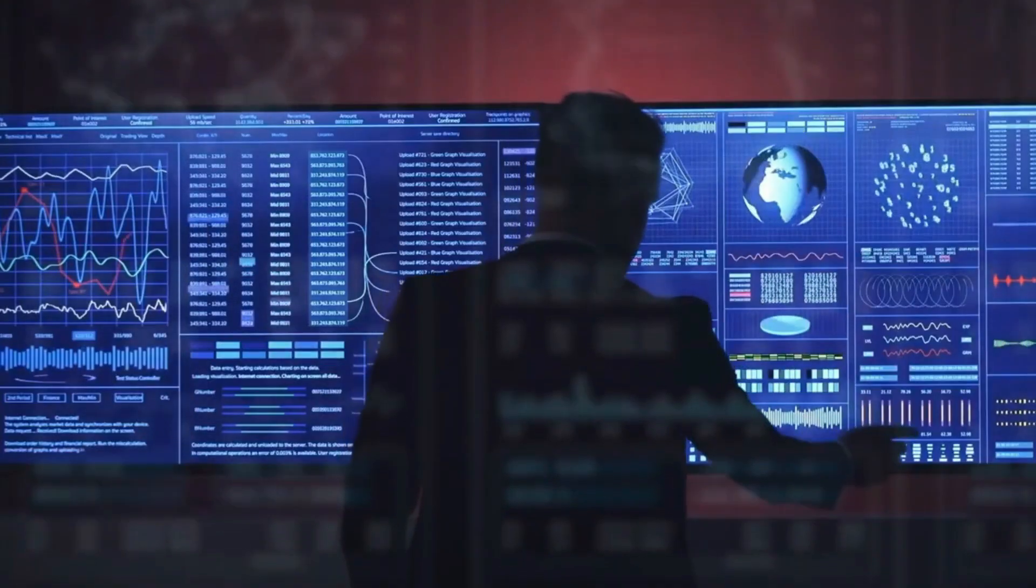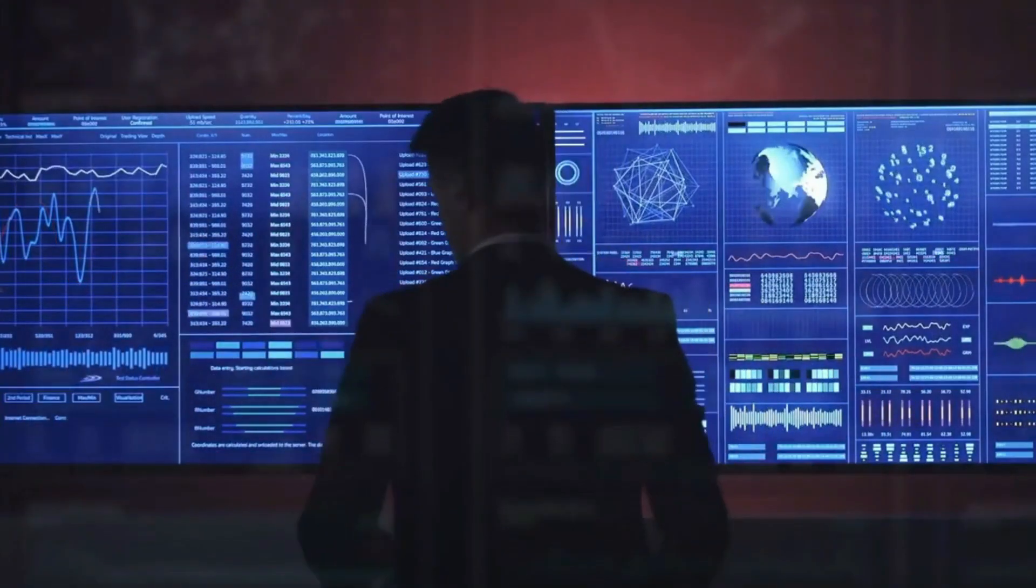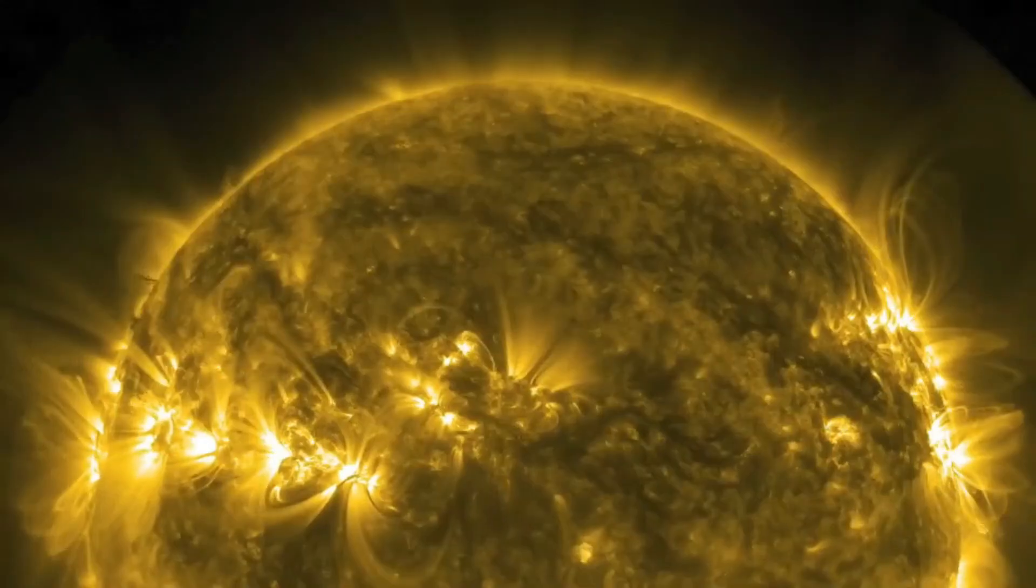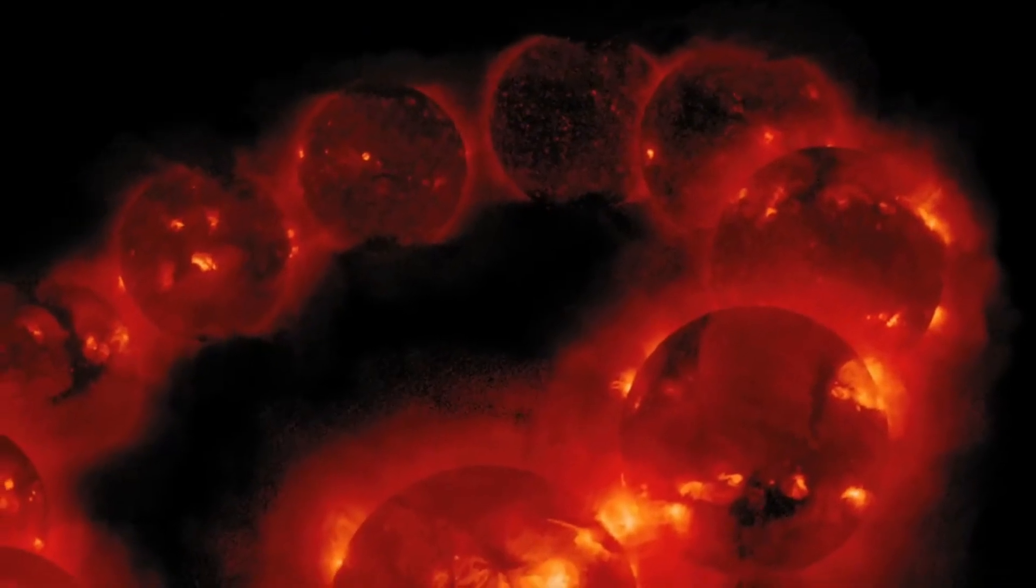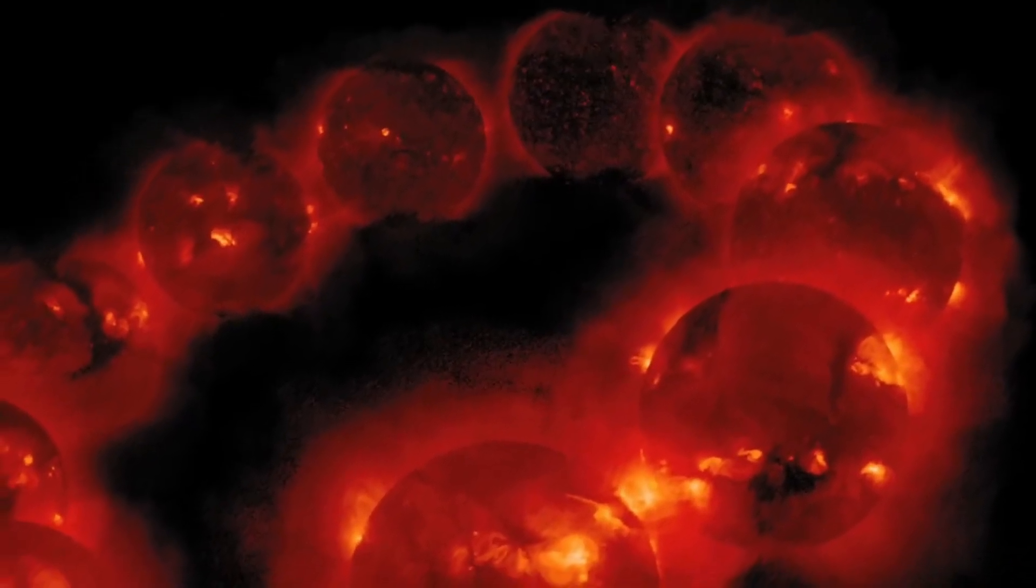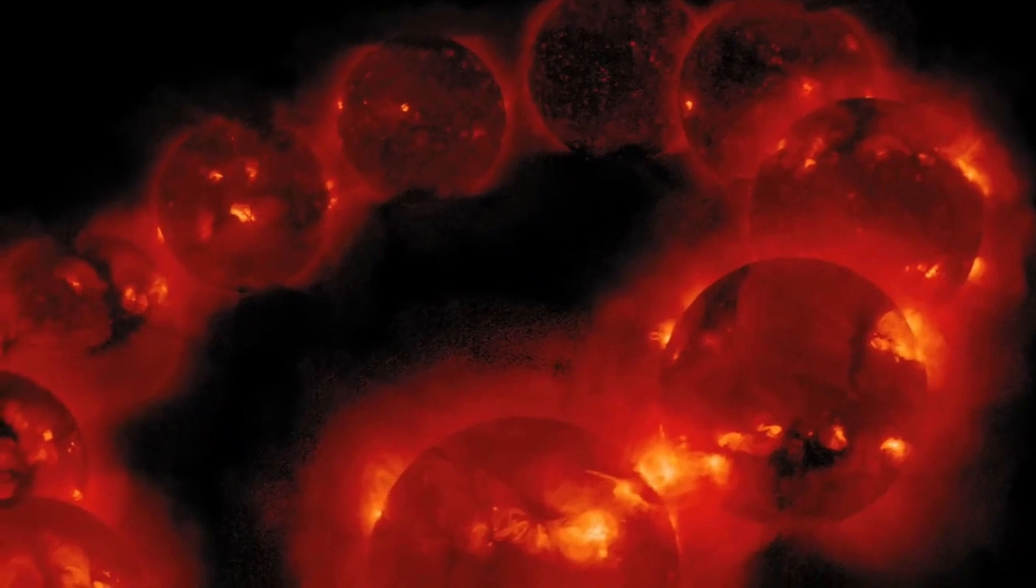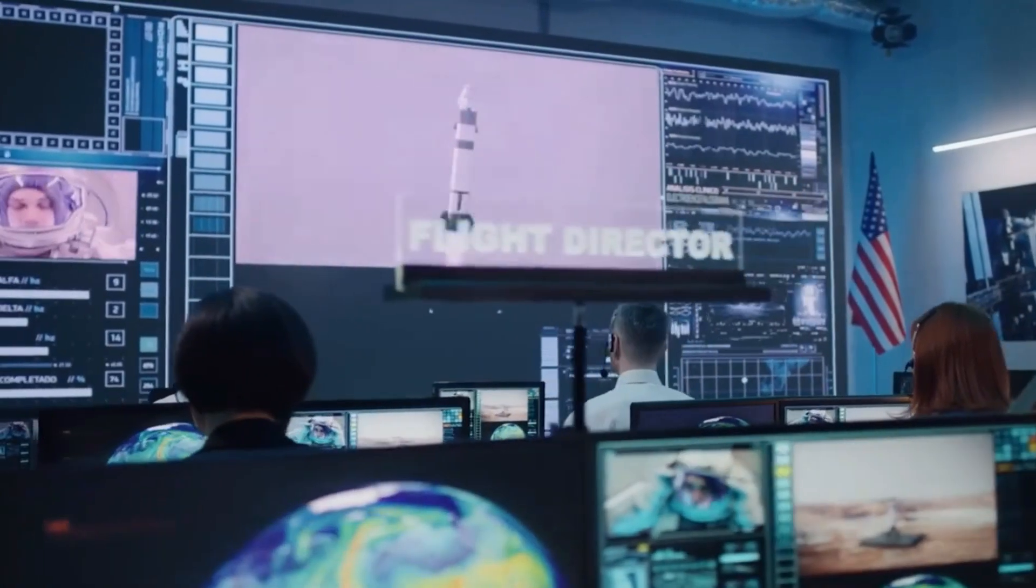To understand the potential scale, we need only look back to March 1989, when a powerful solar flare led to a geomagnetic storm that plunged the Canadian province of Quebec into darkness. The event serves as a wake-up call to the vulnerability of our technological infrastructure to solar phenomena.